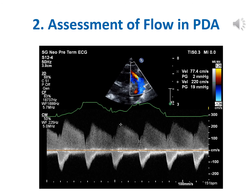This slide shows the pulsatile flow pattern, which has a high systolic and low diastolic velocity. The ratio of peak to minimum velocity should be more than two. If this ratio is less than two, the duct is not classified as pulsatile.